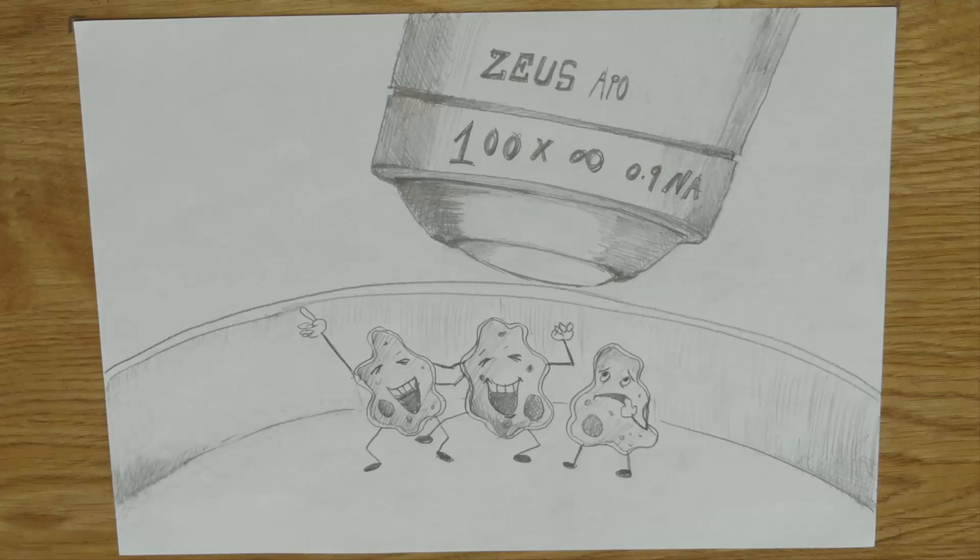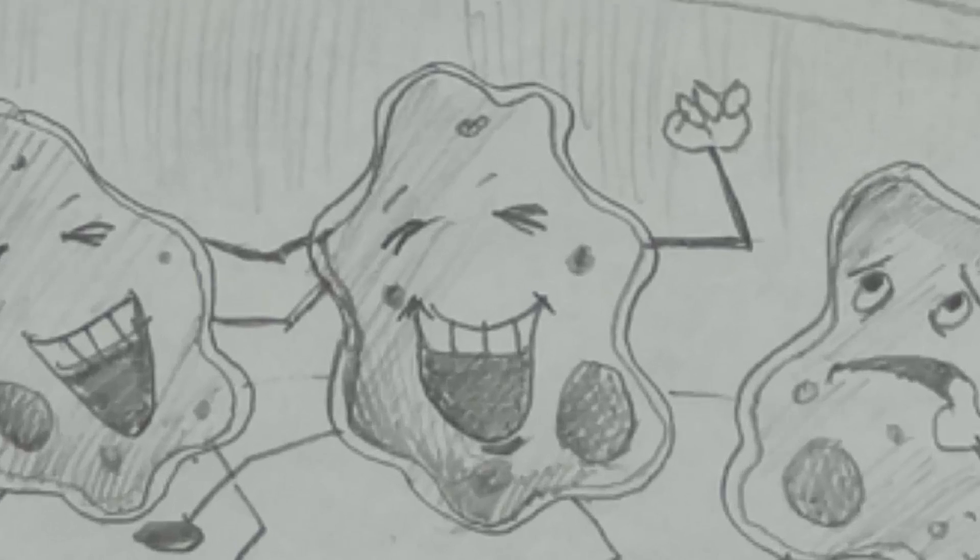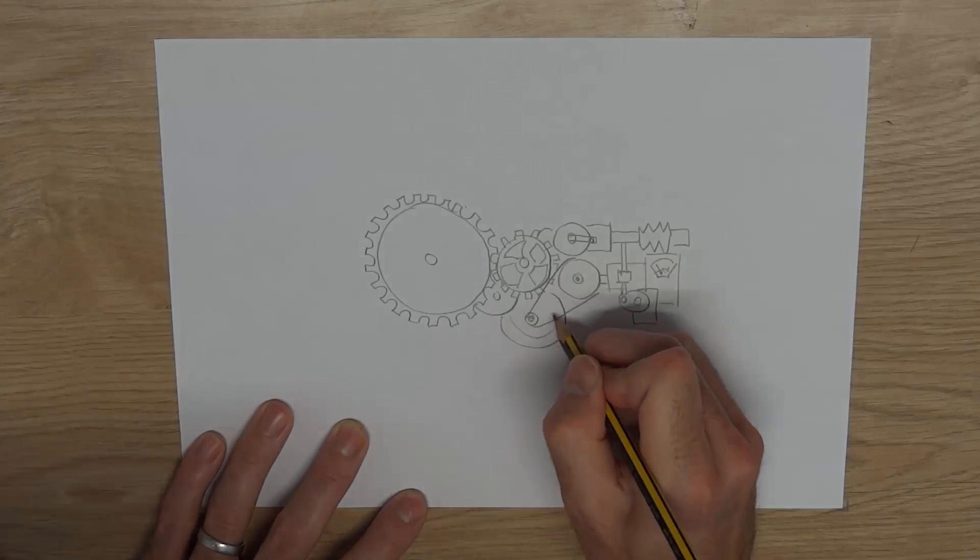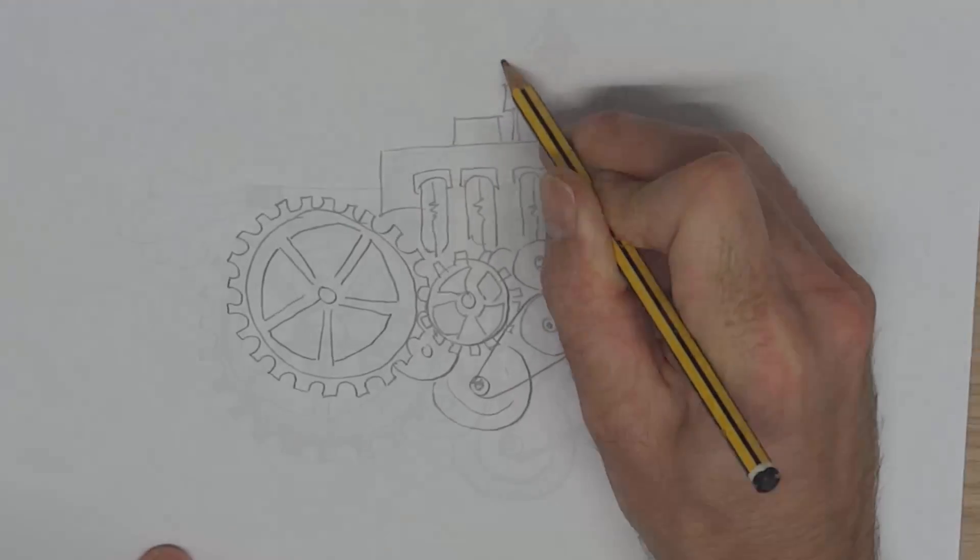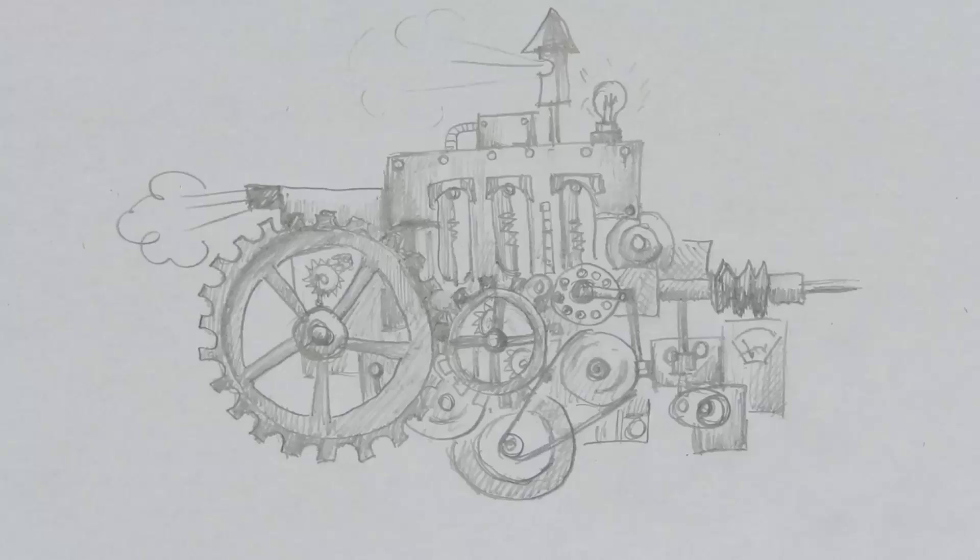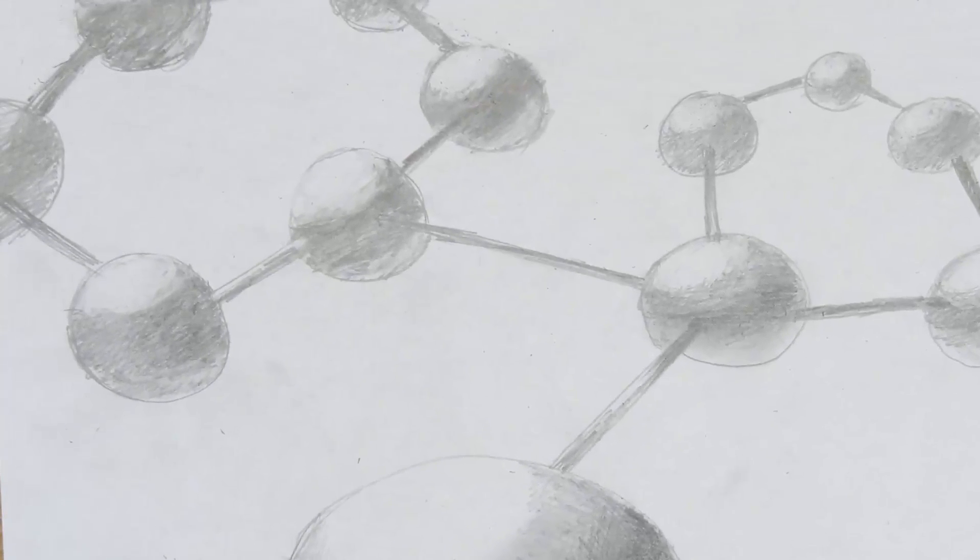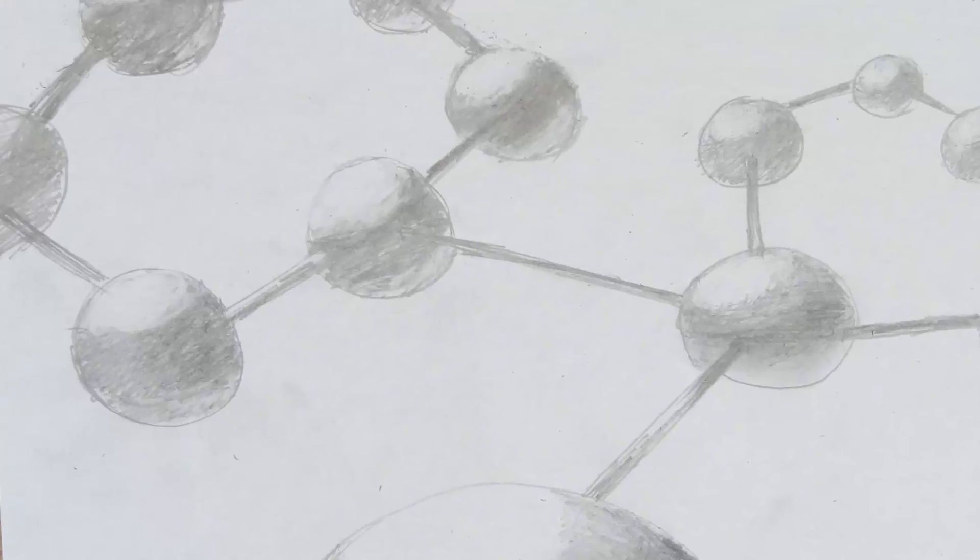Of course we can see these interactions taking place using light microscopy and increase magnification further to look right into the cell to see the machinery at work. In fact, using electron microscopy we can zoom in even further still to see how the machine is put together.